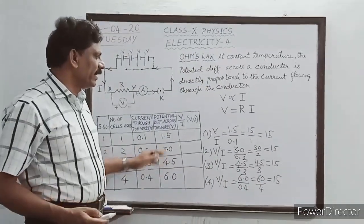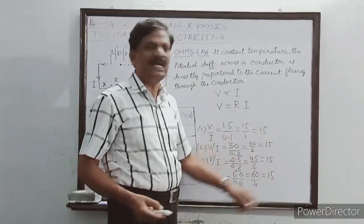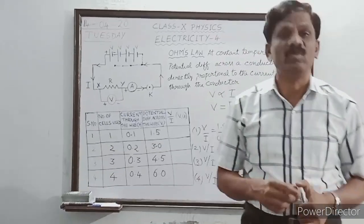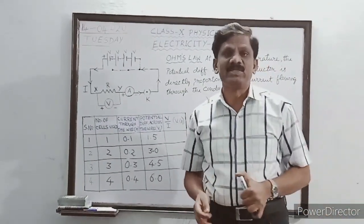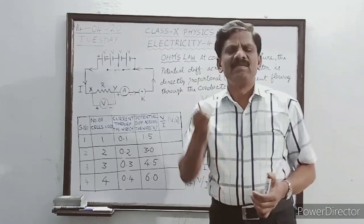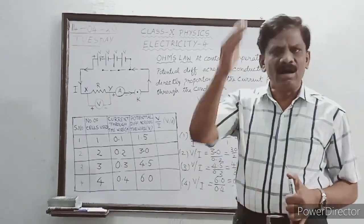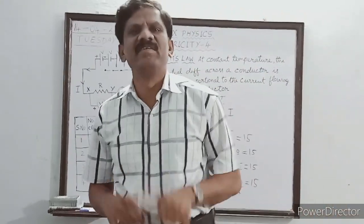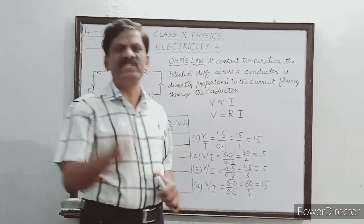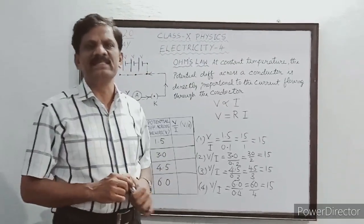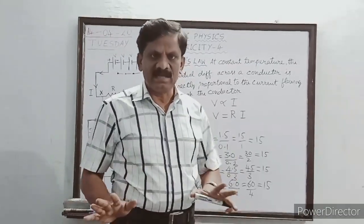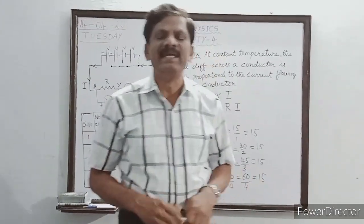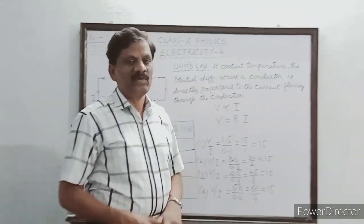These numbers are assumed, but if you see, the ratio is exactly the same. Even when you do the experiment perfectly, all four values of V by I will be the same, or approximately all four values will be around the same average constant. From this experiment, we find that the ratio of potential difference to current is always a constant, and this is true only when the temperature of the conductor is maintained as constant.